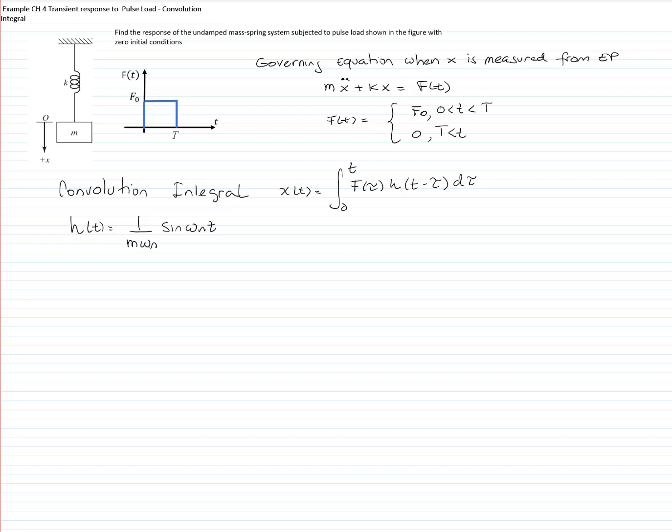This is the solution of an impulse for an undamped system, where zeta is equal to 0. The response, we will have a response that is also piecewise as the function.